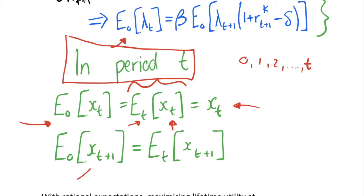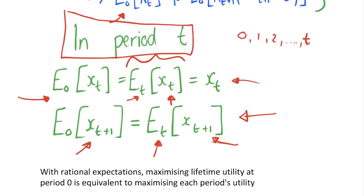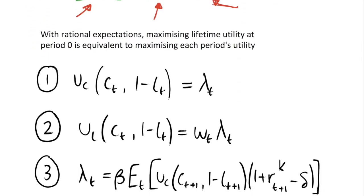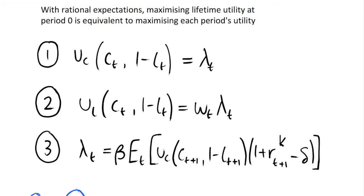If we're considering period T plus 1, we are using period T information, but we don't know the exact values because we're not in period T plus 1 yet — there could still be random shocks in the next period. So we still take expectations of things beyond period T. With rational expectations, maximizing our lifetime utility at period 0 is equivalent to maximizing each period's utility individually. That's a strong simplifying assumption, but it's the one we're going to make.